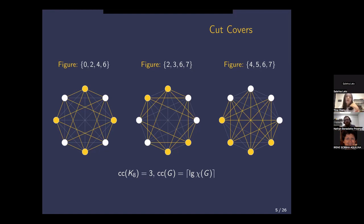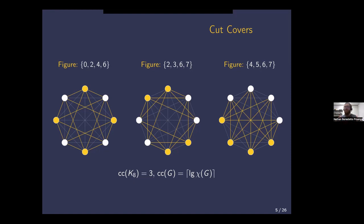Whenever you have a cut cover, you can find a coloring of the cube that you need. So this means we know how to compute the cut cover number. However, the chromatic number is something that in general we do not know how to compute. This raises the question: are there other similar things we could try to approximate and reason about that we could compute for any graph in polynomial time?